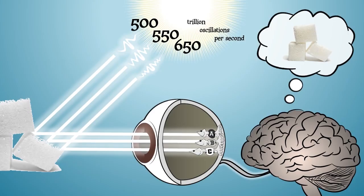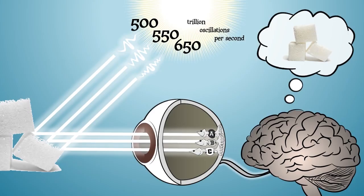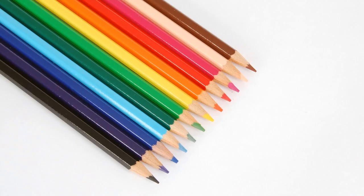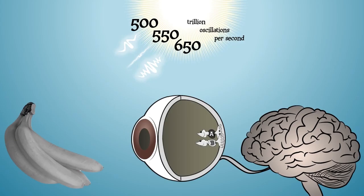So even though we have only three teams of cones, we can see more colors than just red, green, and blue. For instance, the peel of a banana absorbs most photons that oscillate more than 600 trillion times per second, and reflects most photons in the range 500 to 550 trillion oscillations per second. So both teams A and B react strongly. This combined signal does not result in you seeing red and green at the same time, but in a new perception, yellow.